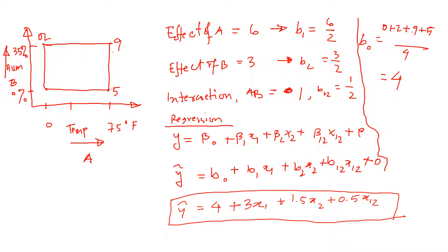So 9, 11 plus 5 is 16, divided by 4 is B0. So the estimated regression line will look like basically 4 plus 3 x1 plus 1.5 x2 plus 0.5 x1 x2.